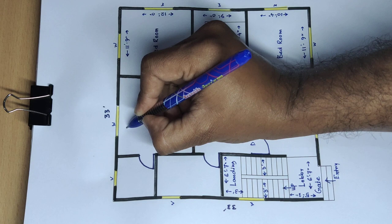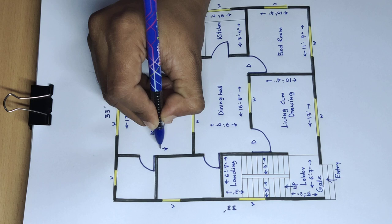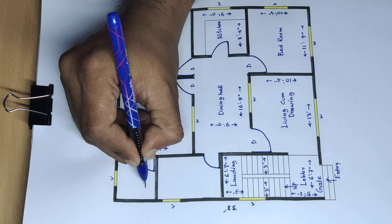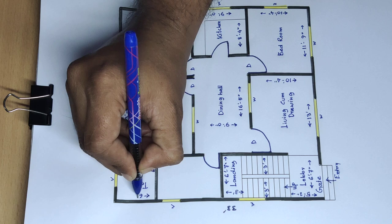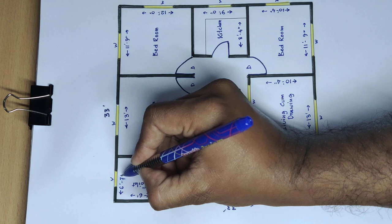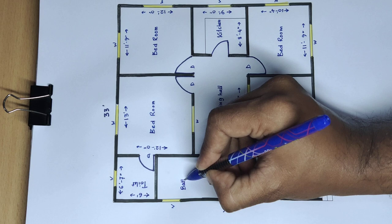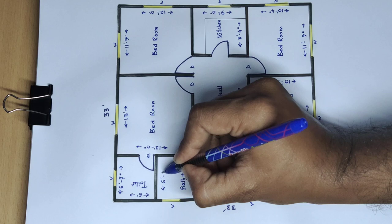This bedroom is 13 feet by 12 feet with door and attached toilet 6 feet by 6 feet 7 inches. Common bath plus latrine is 6 feet 7 inches by 10 feet.